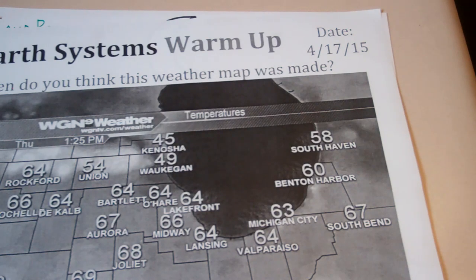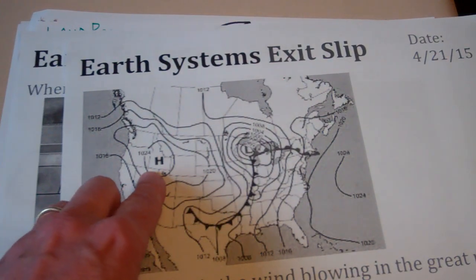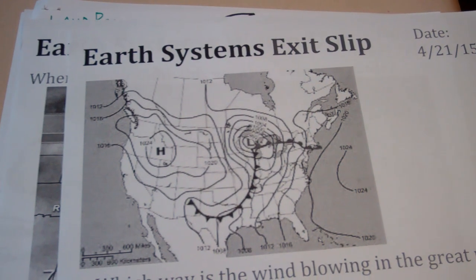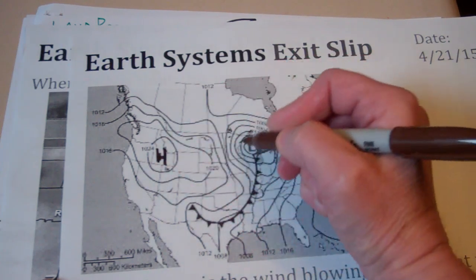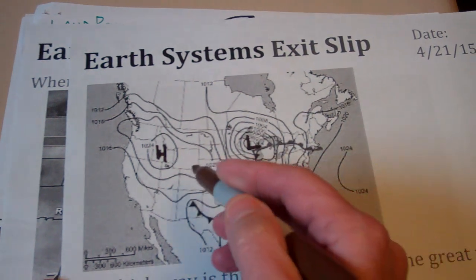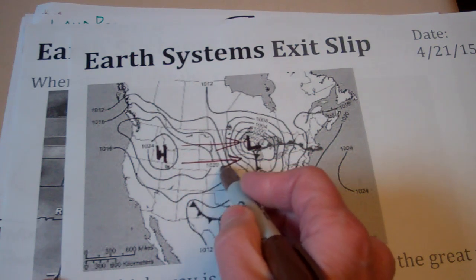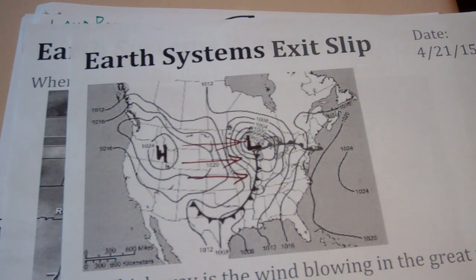Last picture that I want to show is a weather map picture. So we've got a high and a low. Which way is the wind going to blow? Which way will the wind blow? Well, here's your high. Here's your low. Wind always blows from high to low. So in terms of if you're in these Great Plains states or anything, you're going to be experiencing winds coming from the west blowing to the east. That's the end of our video. Good luck.